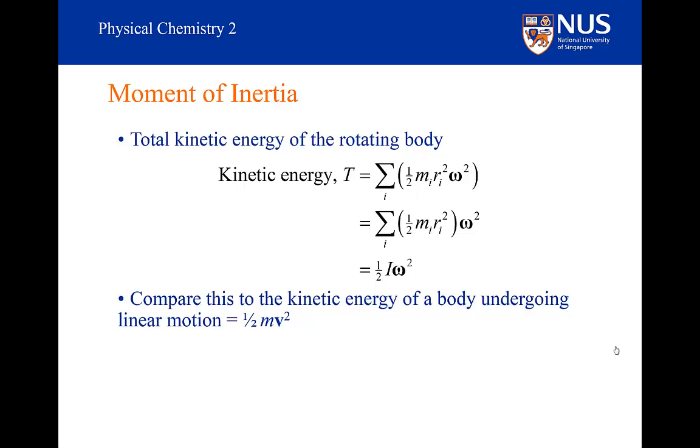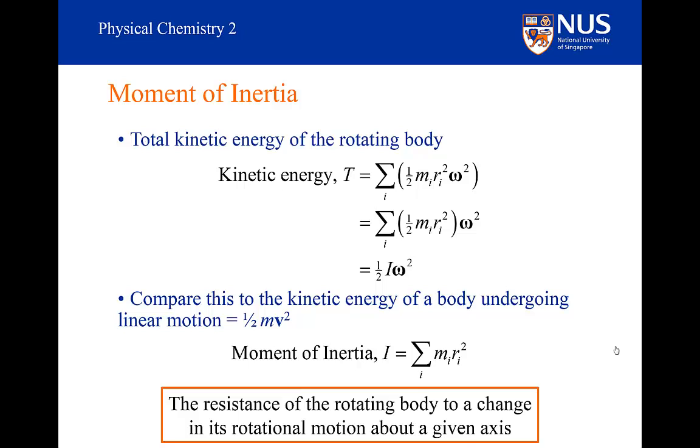So when we make the transformation from linear motion to rotating motion, my linear velocity v gets changed into angular velocity omega, and my resistance to linear motion, mass, gets converted to my resistance to angular motion, the moment of inertia i. So it is directly analogous. So the resistance of the rotating body to a change in its rotational motion about a given axis is my moment of inertia. We can see, of course, that the moment of inertia is axis dependent.